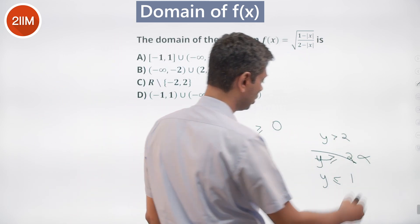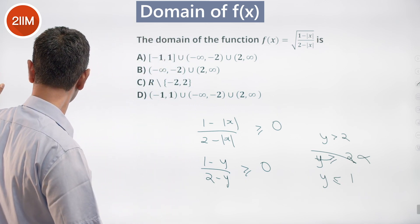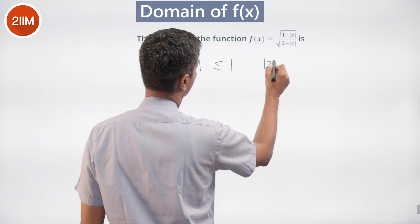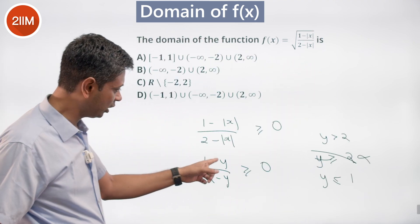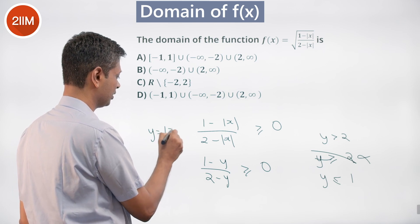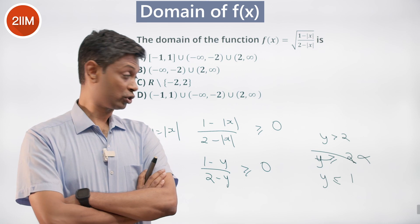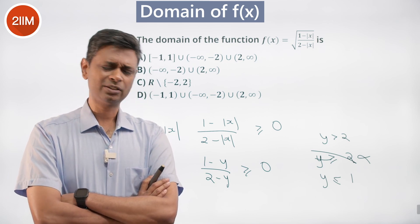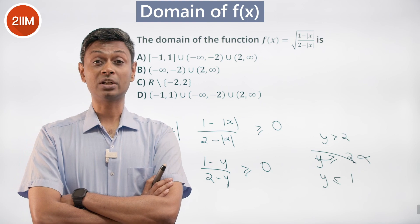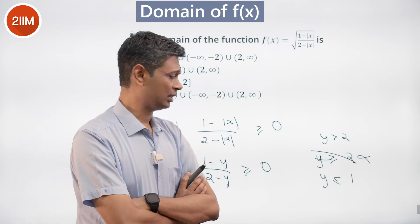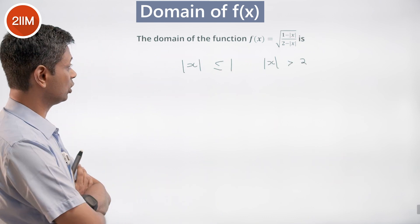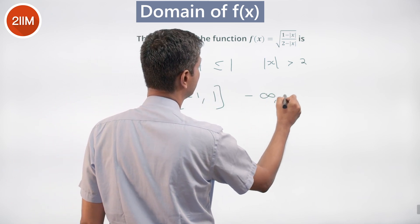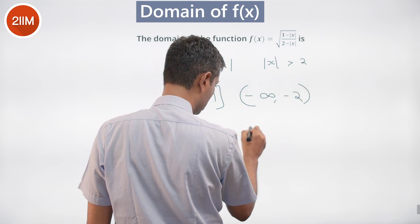So the condition becomes y > 2 or y ≤ 1. Substituting back y = |x|: either |x| ≤ 1 or |x| > 2. This means x lies between −1 and 1 (both included), or x lies in (−∞, −2) or (2, ∞).